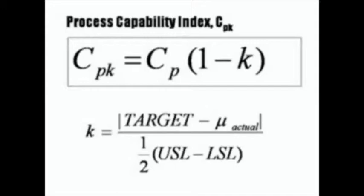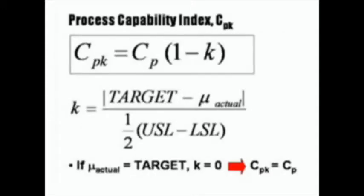A CPK is defined by the process capability ratio we mentioned a minute ago times a term which is 1 minus K. What's K? K is where we account for the target and the center of the process. It is equal to the absolute difference between the target minus the actual mu divided by one half times upper spec minus lower spec. What does that mean? It means if the actual mean of the process is on target or equal the target, the K value will be zero and the CPK will be exactly equal to the CP.